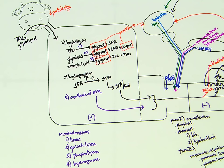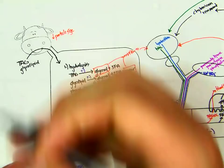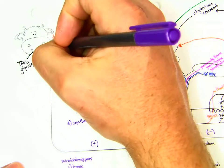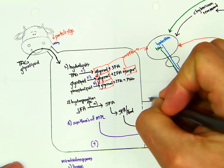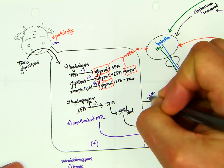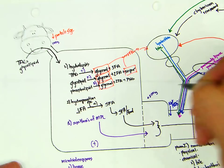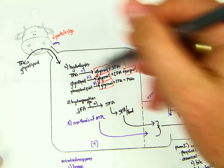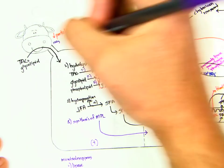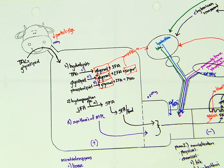So it's possible for the animal to consume 100 grams of lipid, but 200 grams of lipids show up at the abomasum, because 100 grams was synthesized by the microbes in the rumen. Those are made-up numbers, but just to illustrate the concept.